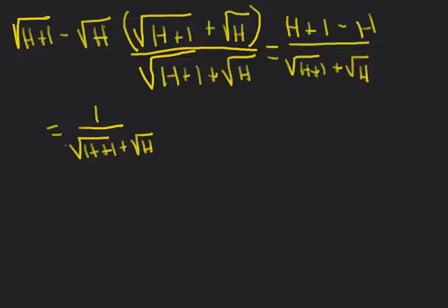The bottom is infinite, so we're looking at a reciprocal of an infinite number, which means this whole thing is an infinitesimal. Multiplying by the conjugate was the algebraic technique we needed. So the difference of two infinite numbers ends up being an infinitesimally small number.